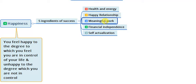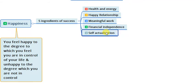The third ingredient is meaningful work. Ask yourself: is the work I am doing giving any value to society? If not, you will never be happy. The fourth ingredient is financial independence — you can achieve this by outsourcing, delegating, automating, doing business, and solving people's problems. If you put value into the world, it will give you value in return. The fifth ingredient is self-actualization — actualizing who you are and becoming what you think.